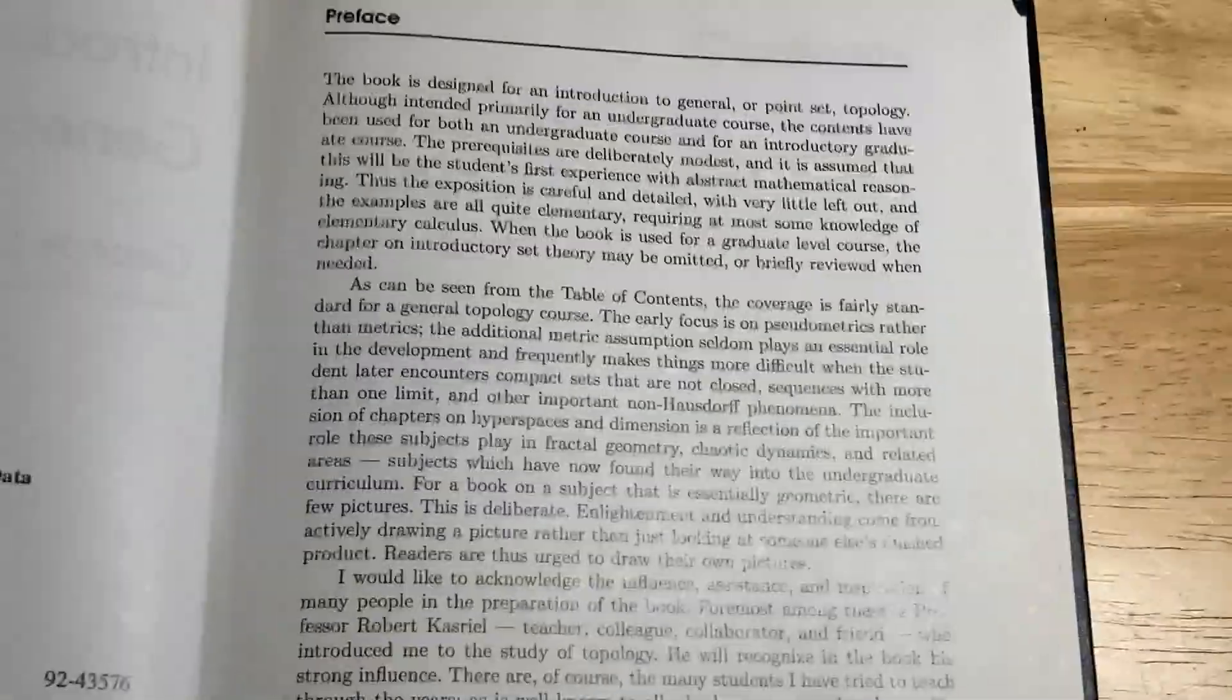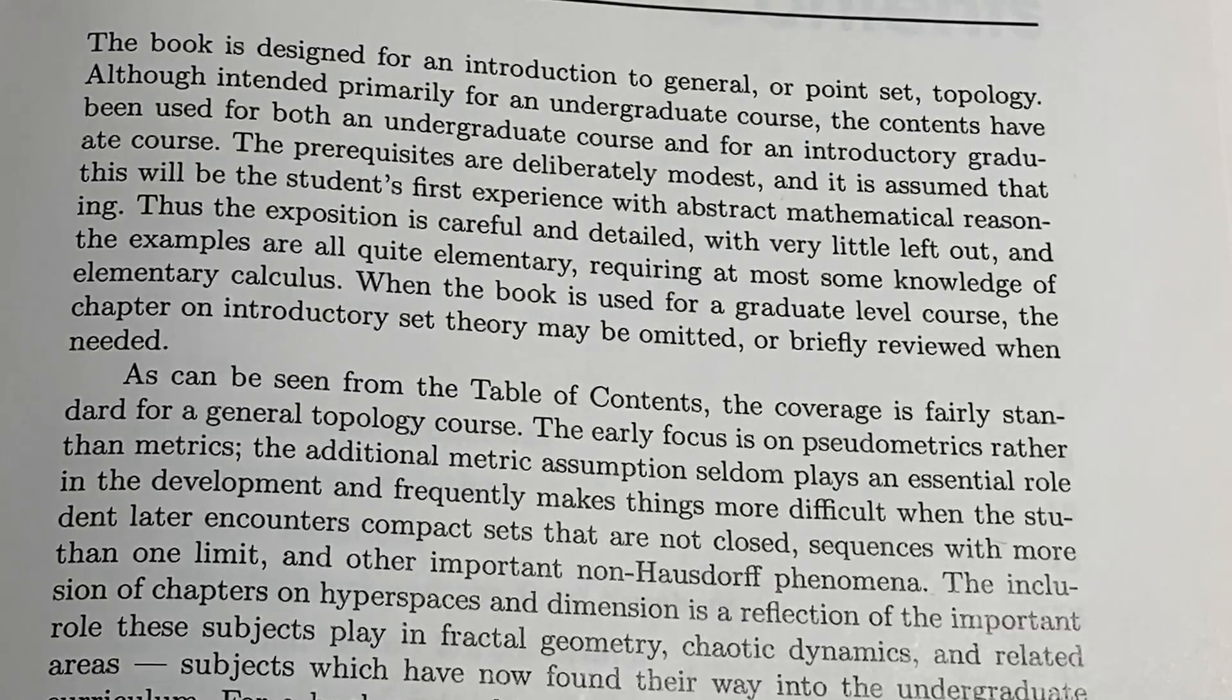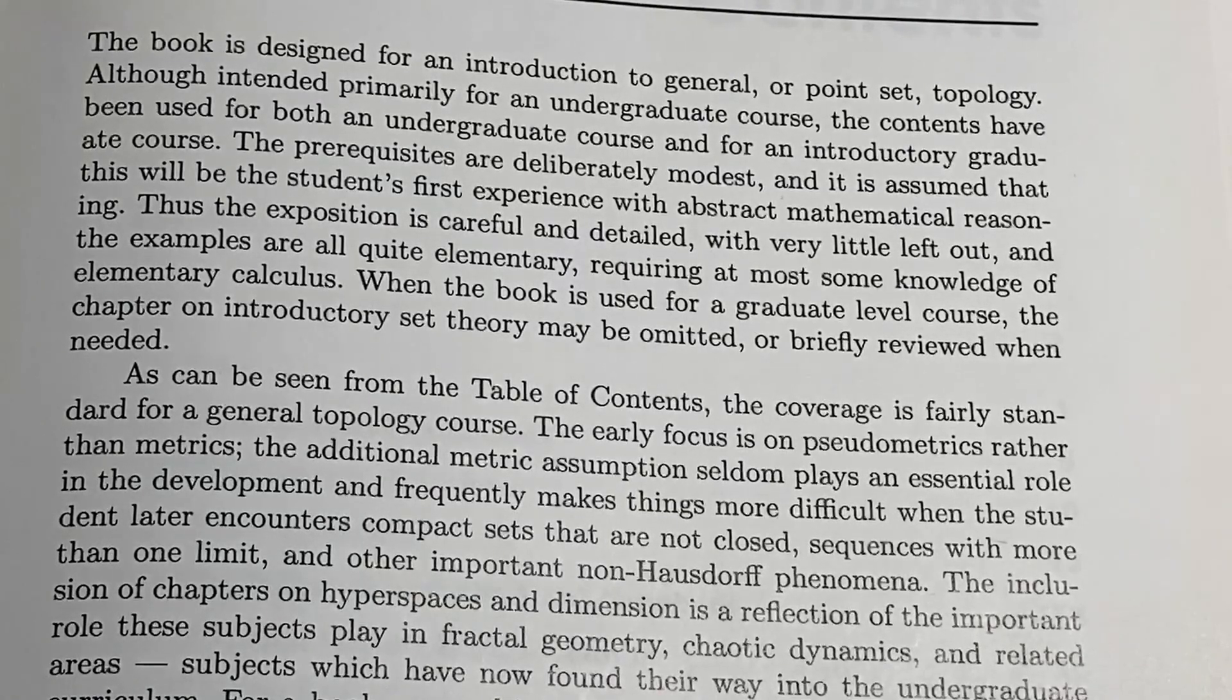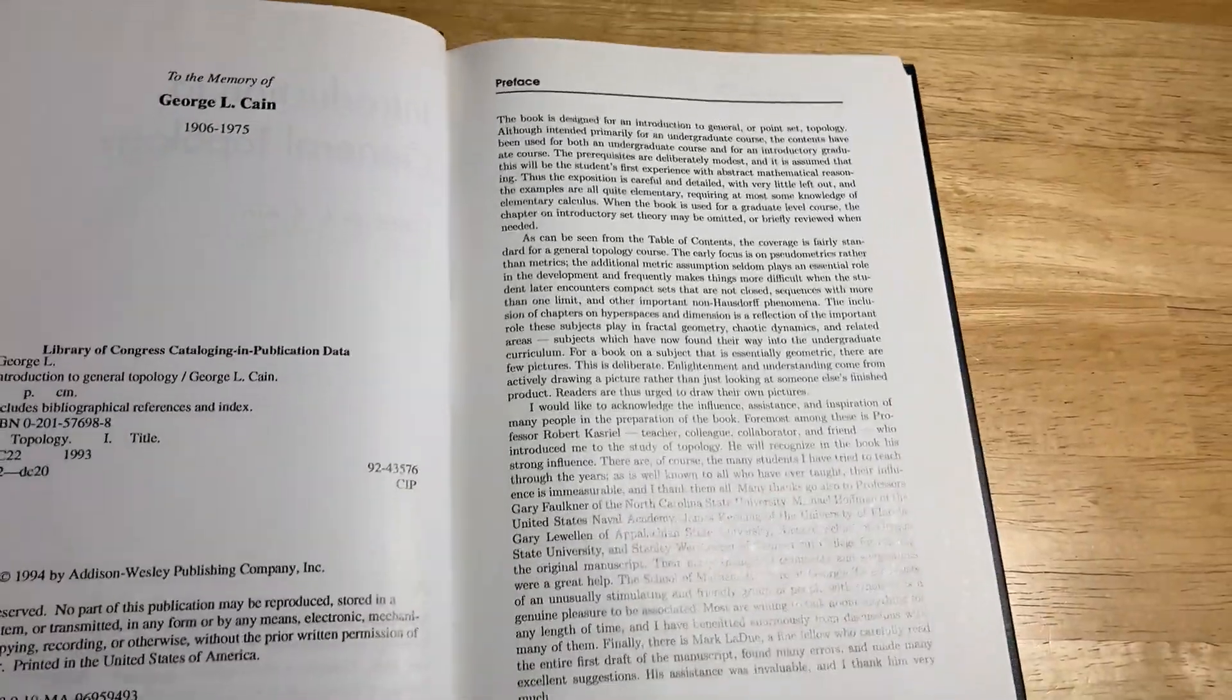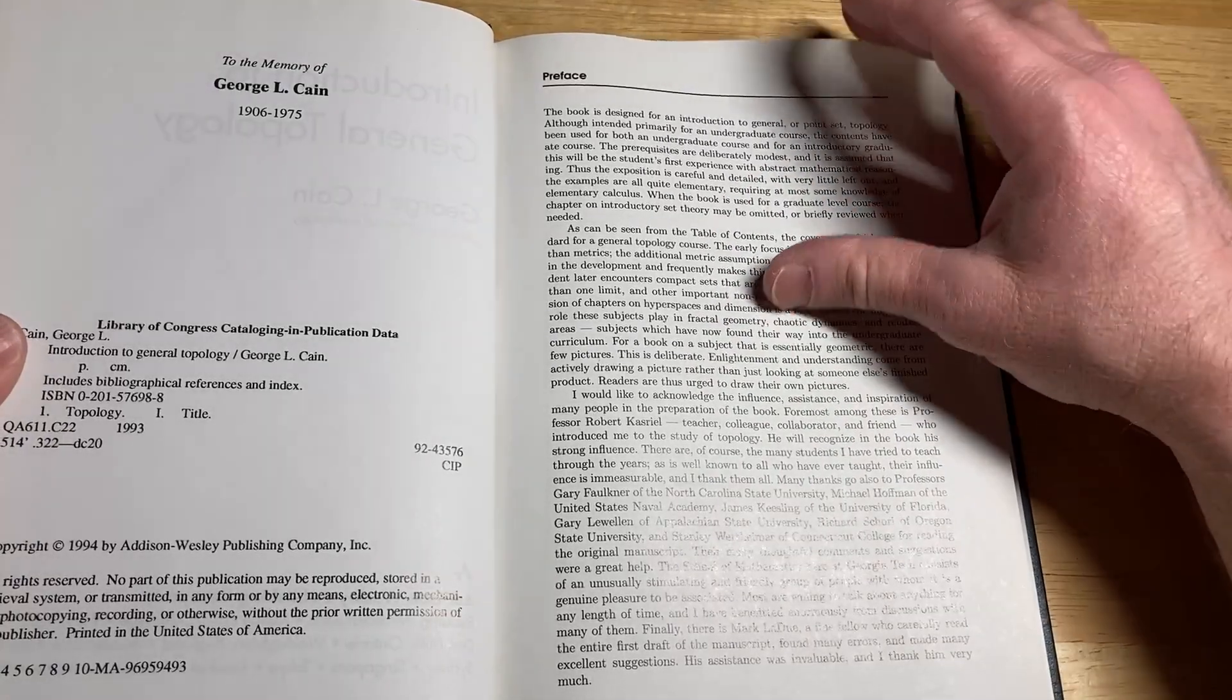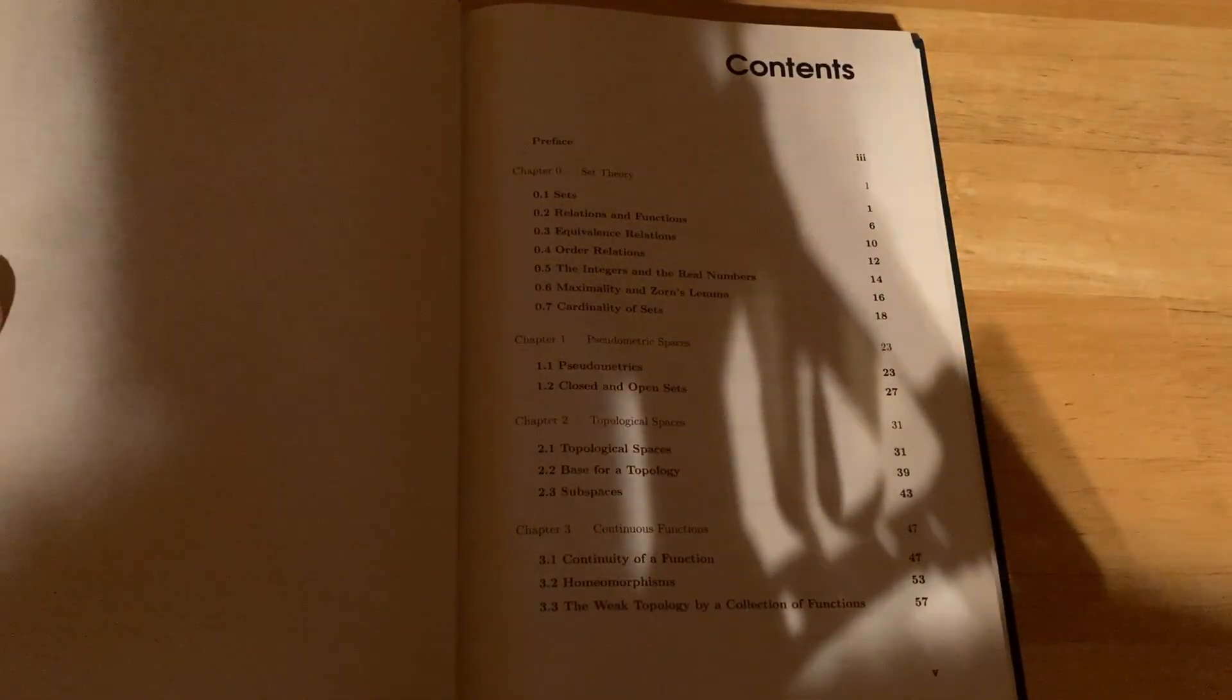Here it talks a little bit about who the book is for. This book is designed for an introduction to general or point set topology. So this is what you study as an undergraduate, oftentimes as a graduate. Although intended primarily for an undergraduate course, the contents have been used for both an undergrad course or for an introductory graduate course. Yeah, sure. You could take this as a first-year graduate student. The prerequisites are deliberately modest, and it is assumed that this will be the student's first experience with abstract mathematical reasoning. Now, I don't think that's necessarily – I mean, this would be a very hard first encounter with your first experience in abstract mathematical reasoning. I think people would struggle.